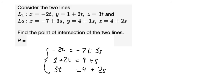So we put the variable on the left, the number is on the right. So you got negative 2t minus 3s is equal to negative 7. The next one, we have 2t minus s is equal to 3. And this one, 3t minus 2s is equal to 4.